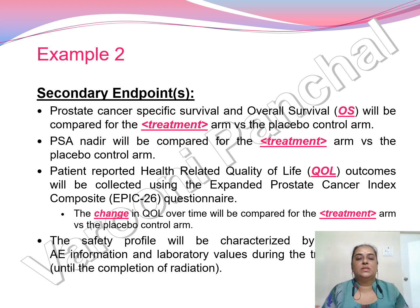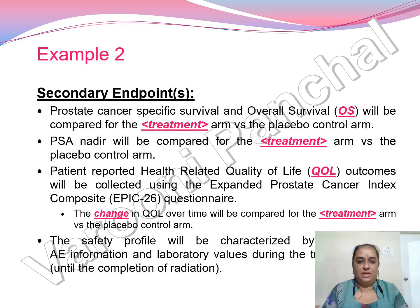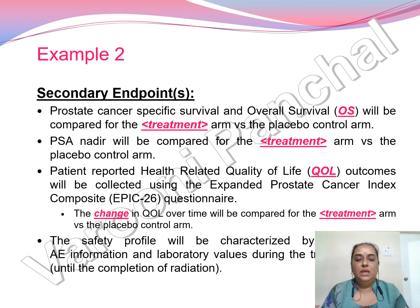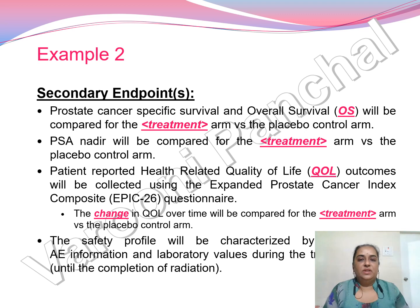The secondary endpoints for example two include: prostate cancer-specific survival and overall survival compared for treatment versus placebo; PSA response compared for treatment versus placebo; and patient-reported health-related quality of life outcomes collected using the Expanded Prostate Cancer Index Composite (EPIC-26) questionnaire.